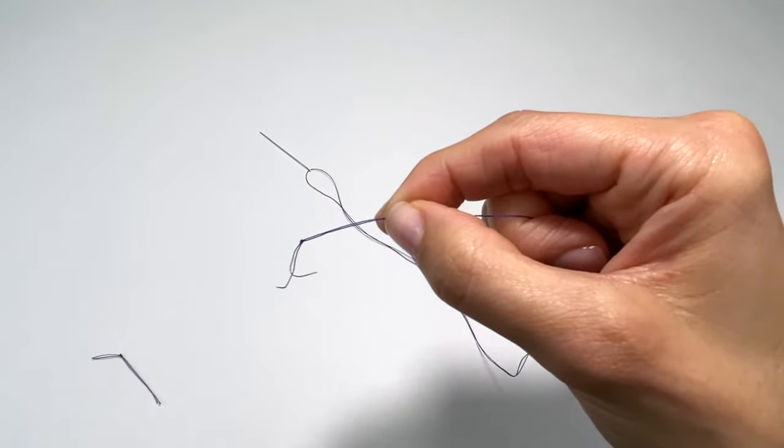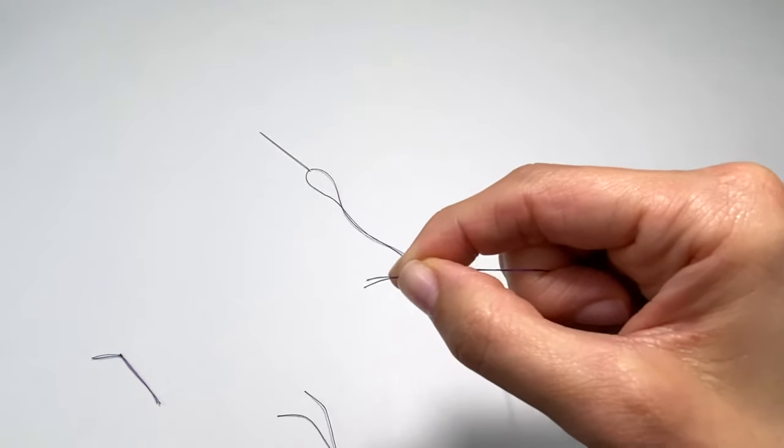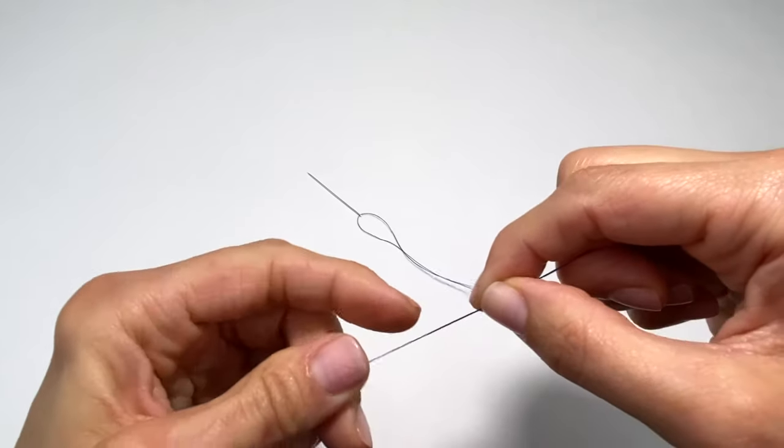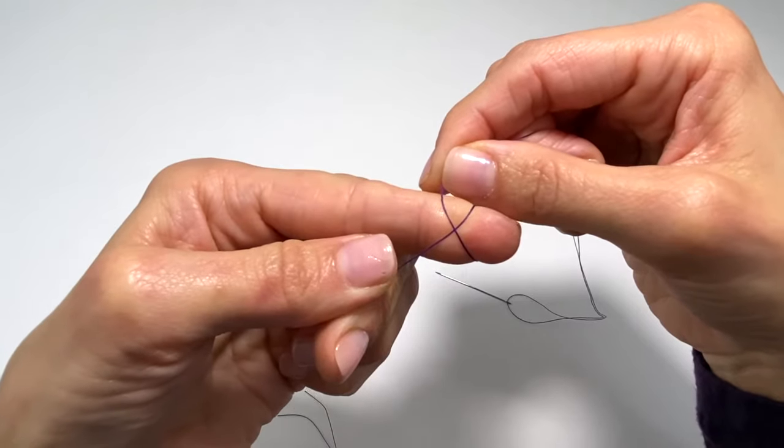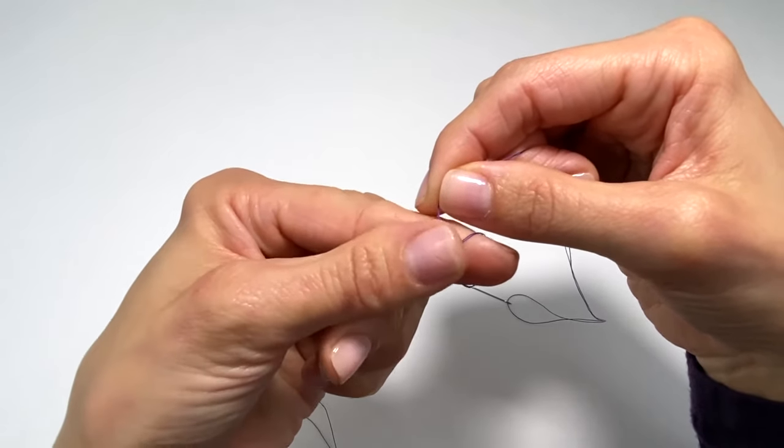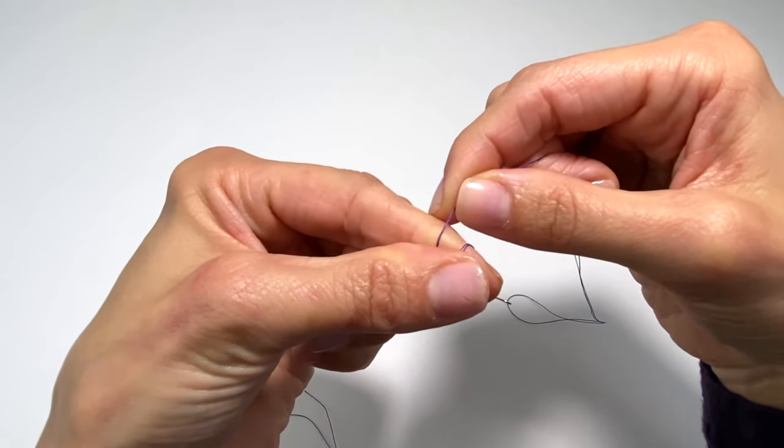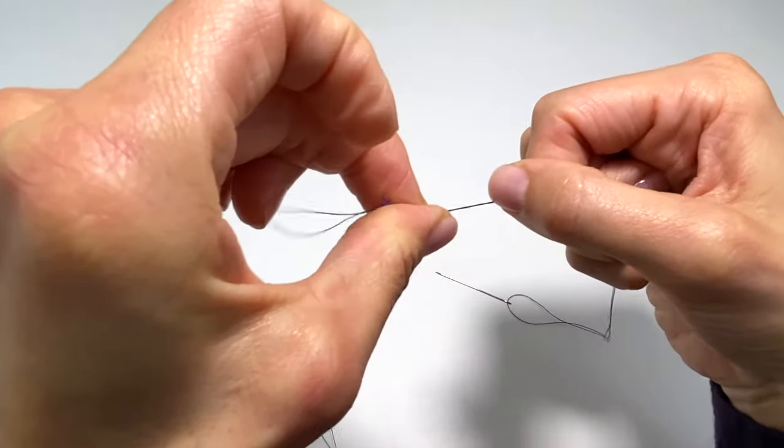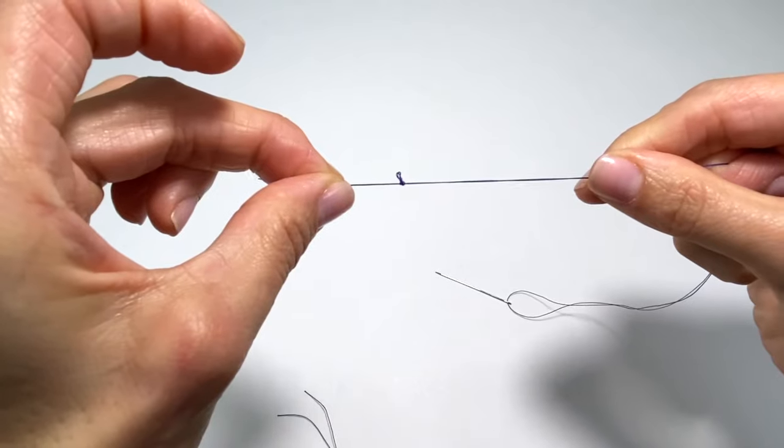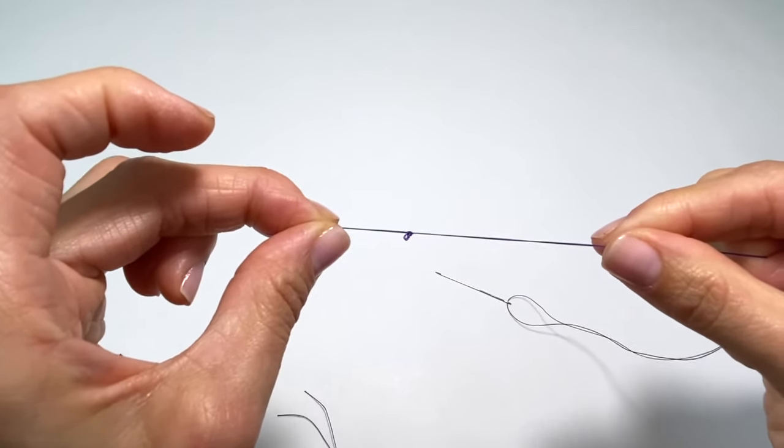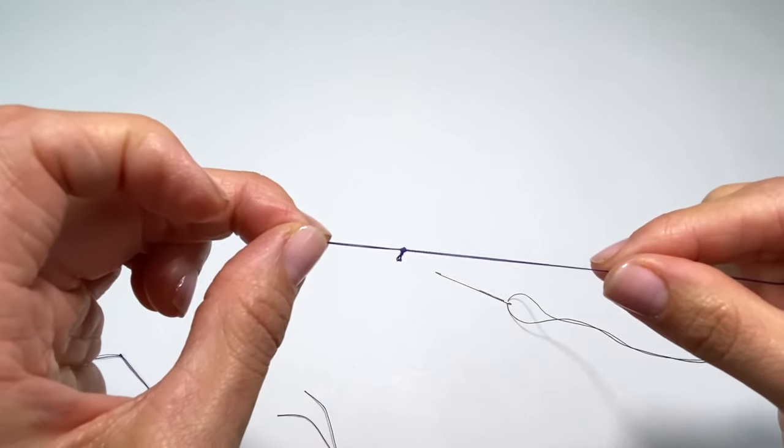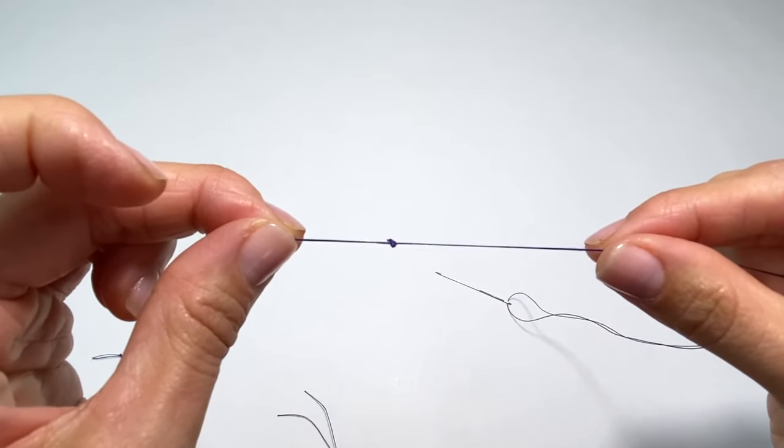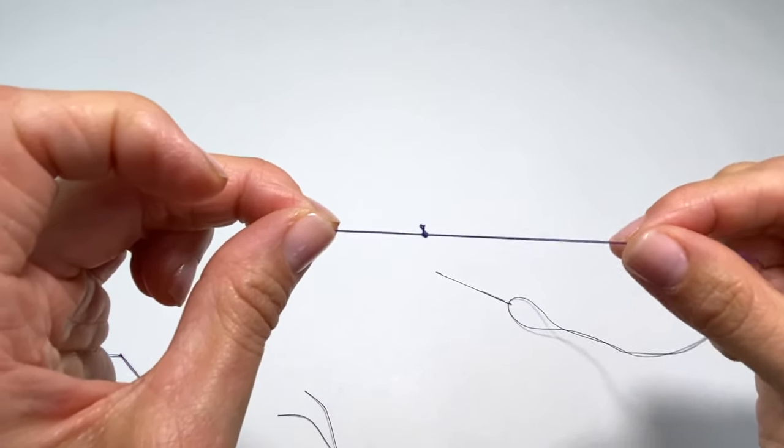And then the second way, the magic knot again: make an X on your pointer finger, put your thumb over the X, roll your fingers, then hold it and pull—magic knot. Practice that, and before you know it you're going to be able to do this without even thinking about it. See you in the next course!